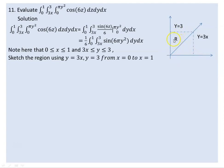This is the triangular region. The original integral uses dy dx, which represents vertical strips. Switching to horizontal strips gives dx dy. In terms of x, x goes from 0 to y over 3. This is x equals 0 and this is y equals 0, so x limits are 0 to y over 3.